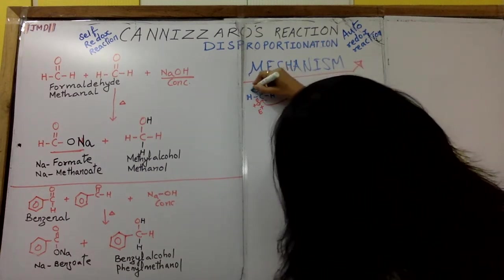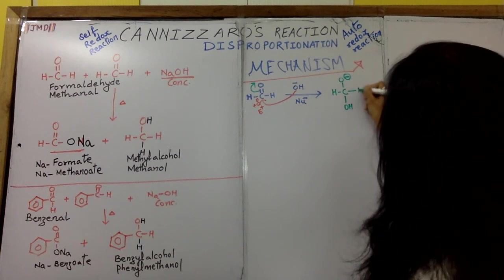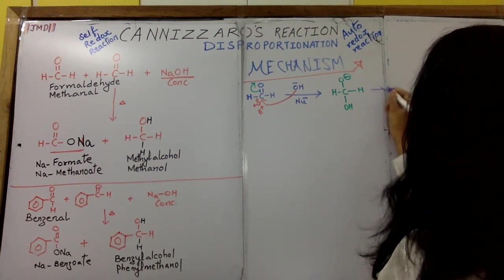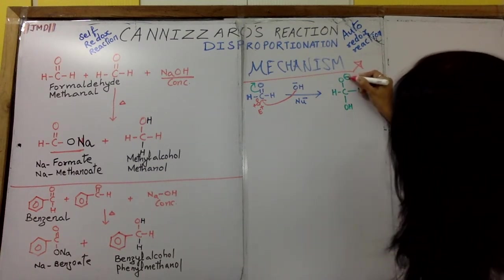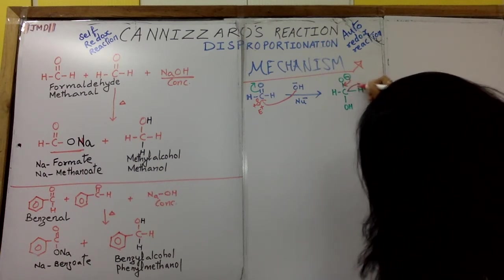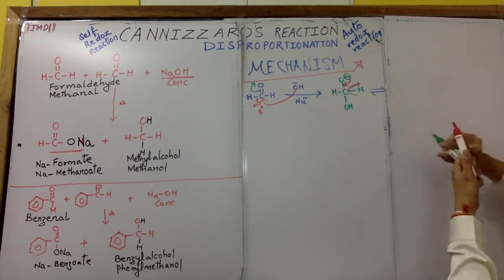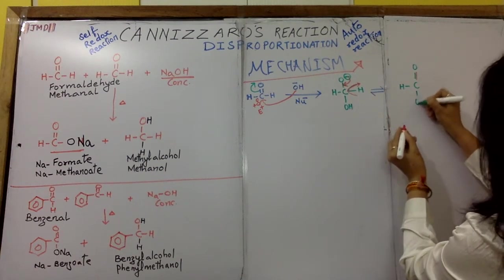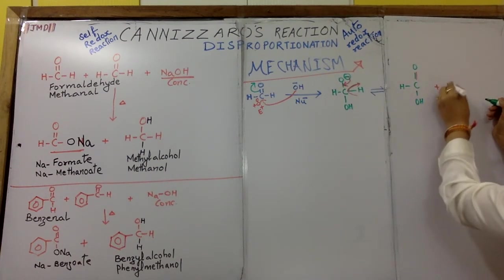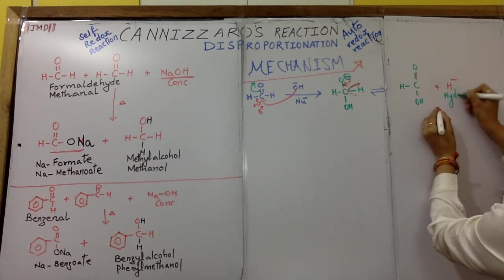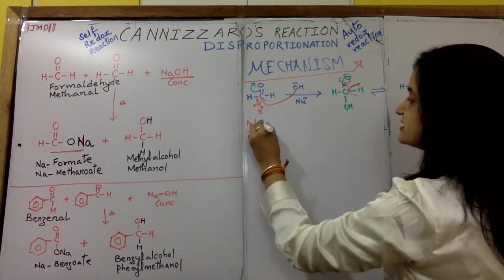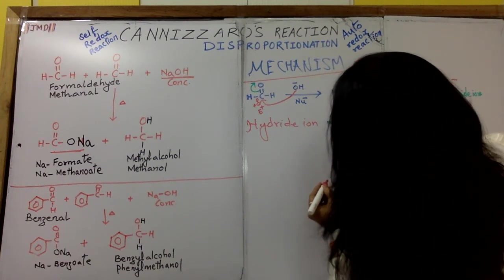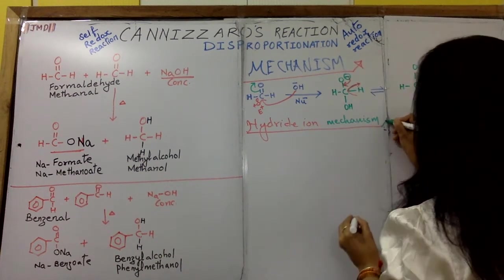When OH⁻ attacks the carbonyl carbon, the pi electrons move up so the oxygen takes on a negative charge. This then undergoes resonance: the H leaves with the two electrons of the bond as a hydride ion (H⁻). We get the intermediate H-C-O⁻ with the OH attached, and the hydride ion is released. That is why Cannizzaro's reaction is known as the hydride ion mechanism or hydride transfer mechanism.